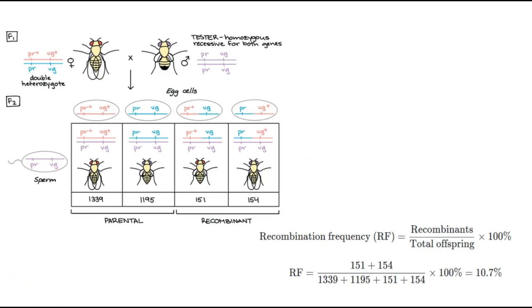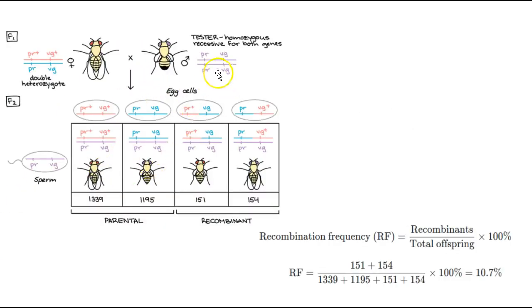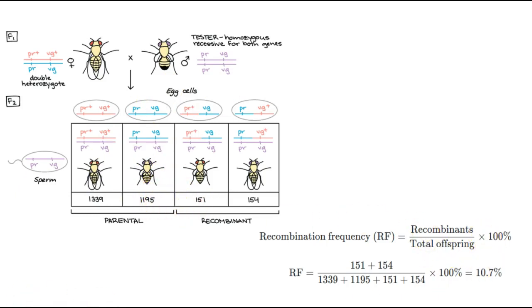So, based on that, if we take a look at just an example, let's just grab three genes, A, B, and C. And after the same types of situations as this, we end up finding that recombination values for A to B are 13.2%. Looking at B and C was 6.4, and looking at A and C was 18.5.